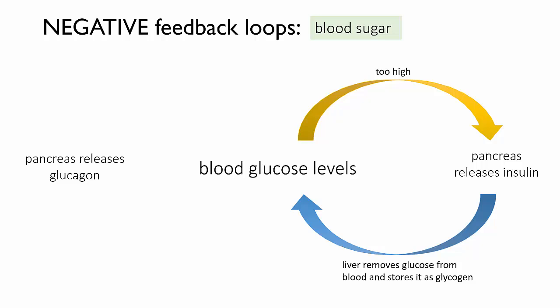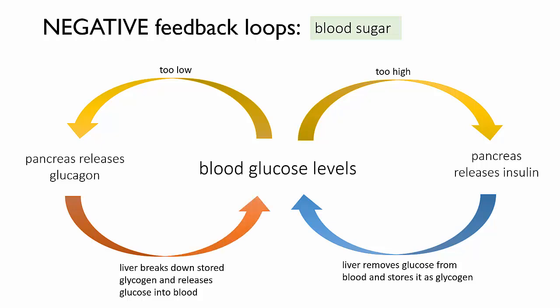As time goes on, your body cells use up glucose — particularly if you're exercising — and the pancreas will detect that the glucose levels have dropped a bit low. When this happens, it releases the other hormone, glucagon, into the blood. It may help you to remember that glucagon is the hormone that's released when the glucose is gone. Glucagon travels to the liver cells and stimulates them to break down the stored glycogen and release it into the blood. This restores your blood glucose levels.